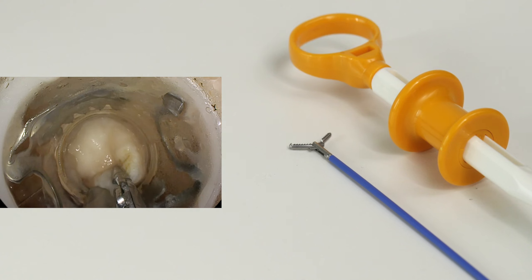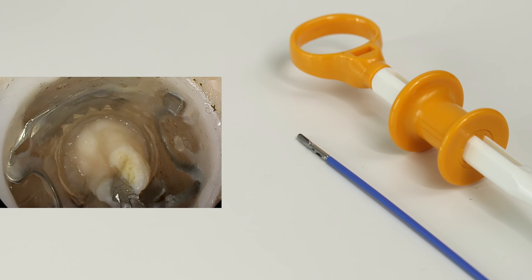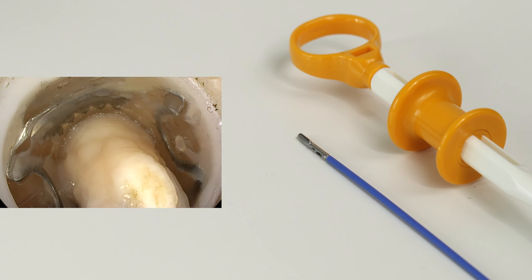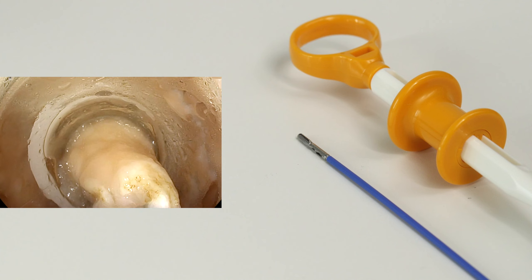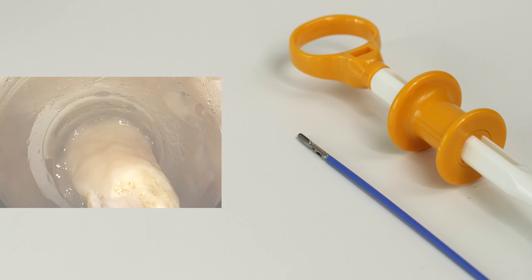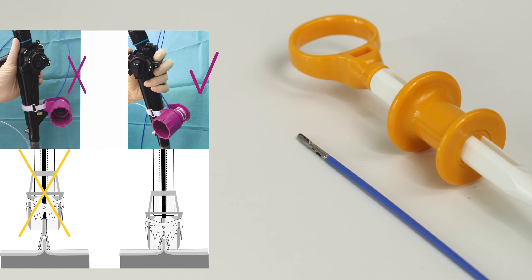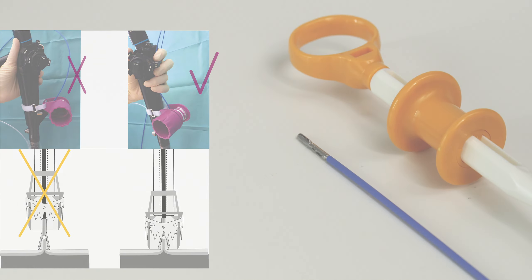When using the FTRD grasper, it must be ensured that the instrument tip is sufficiently drawn into the application cap and remains in this position while the clip is released. Otherwise, the clip may be applied to the instrument shaft or parts of the branches, and the instrument may become attached to the tissue as a result.